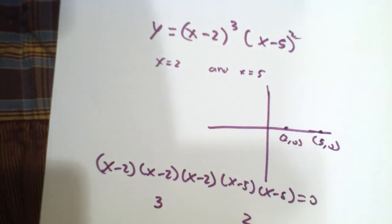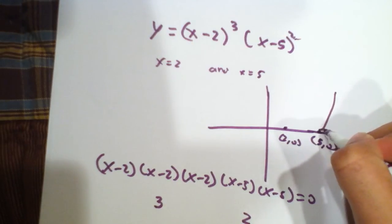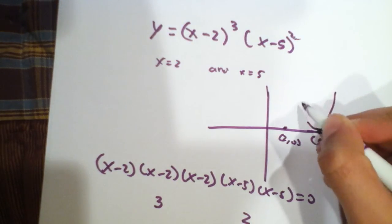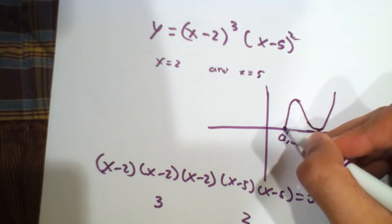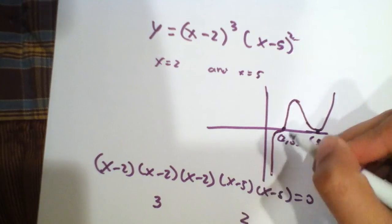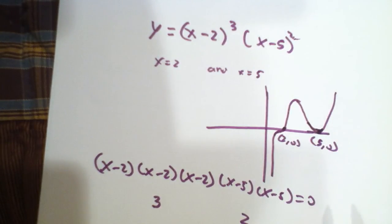So, the graph of this actually looks something like, well, it touches at 5, right? And it goes through at 2. So, that is actually what the graph ends up looking like.